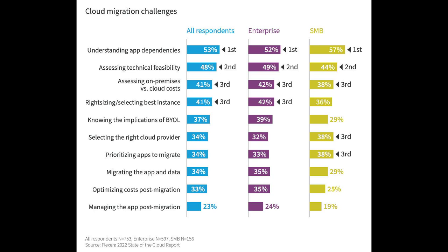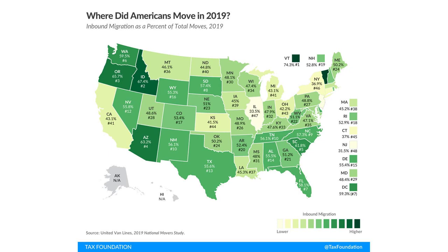Throughout history, migration has been a fundamental aspect of human existence. People have always moved from one place to another, whether it be due to environmental changes, economic opportunities, or conflicts. These movements have had a profound impact on the development and evolution of cultures around the world.